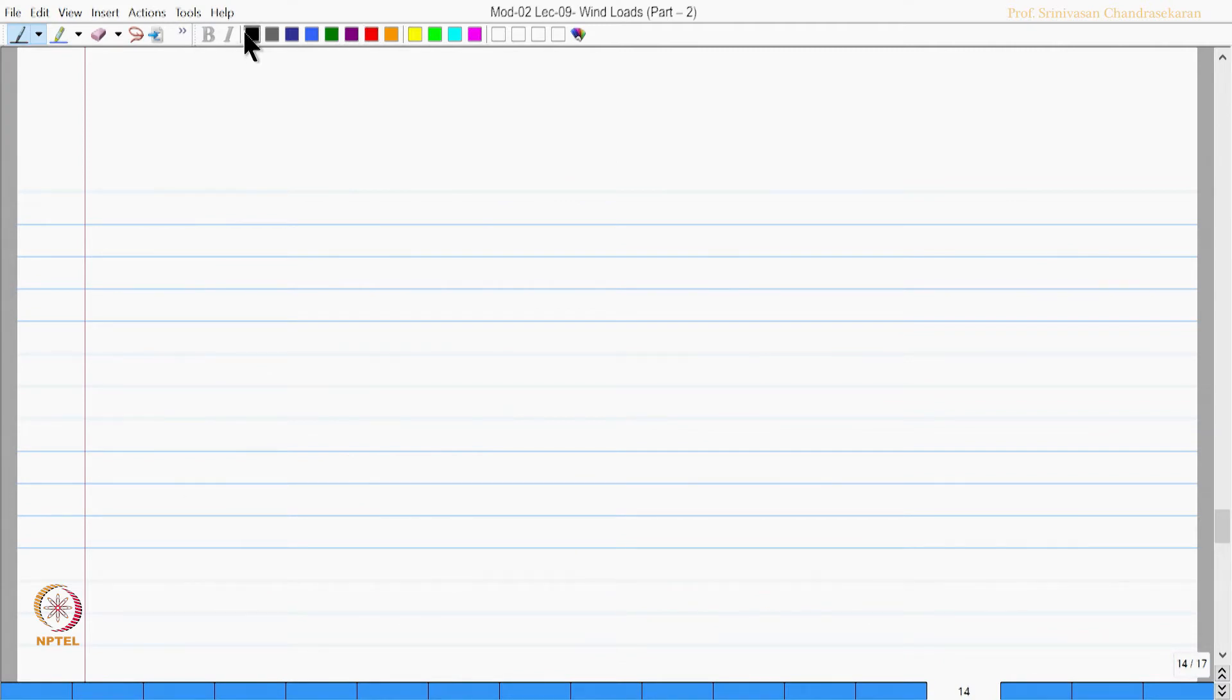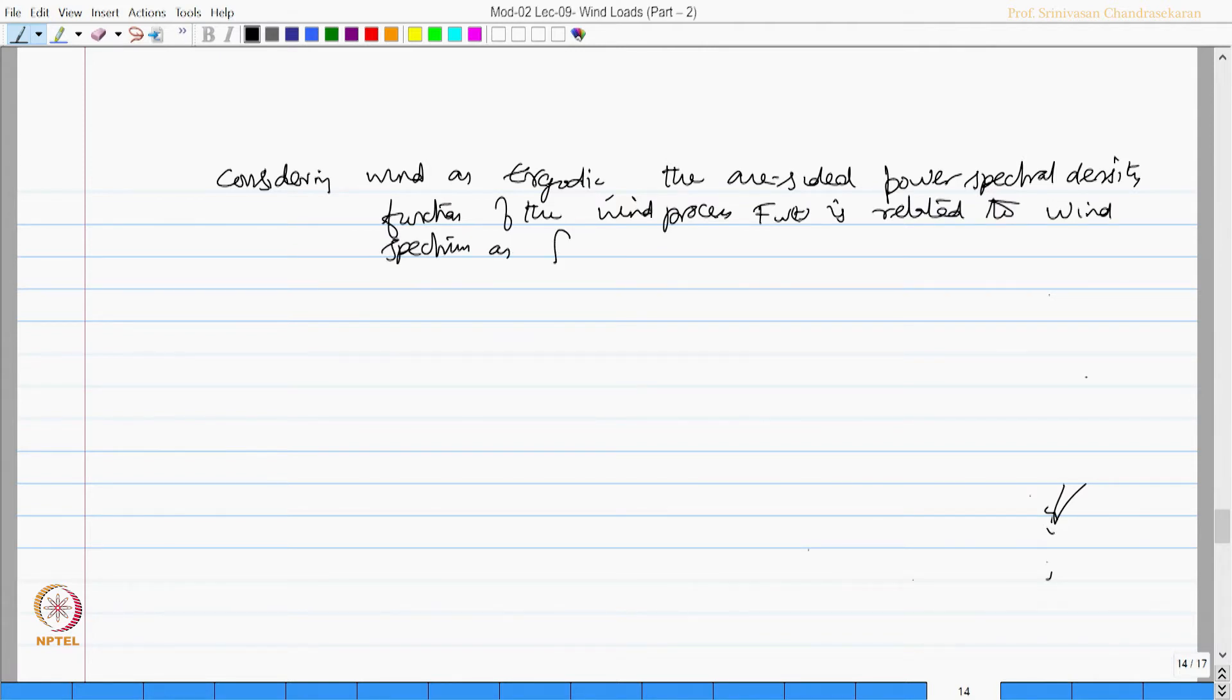Considering wind as an ergodic process, the one sided power spectral density function of wind process F w of t is related to wind spectrum as follows, is given by rho CD A V bar V bar square S u omega. We call this equation number 6.